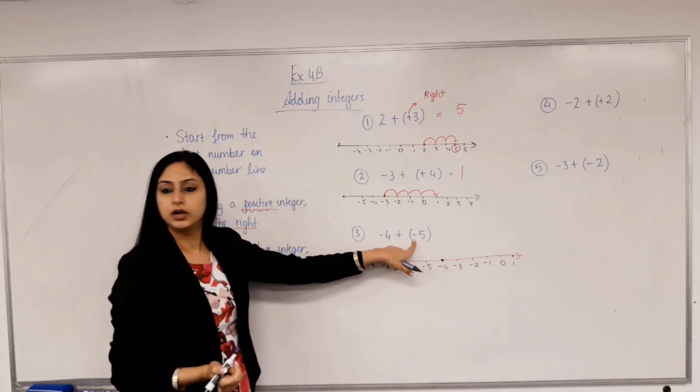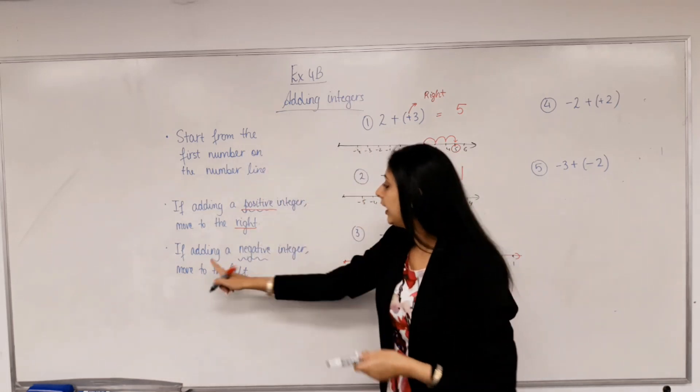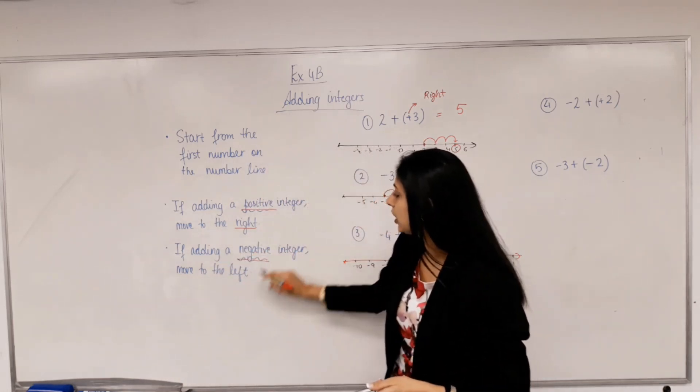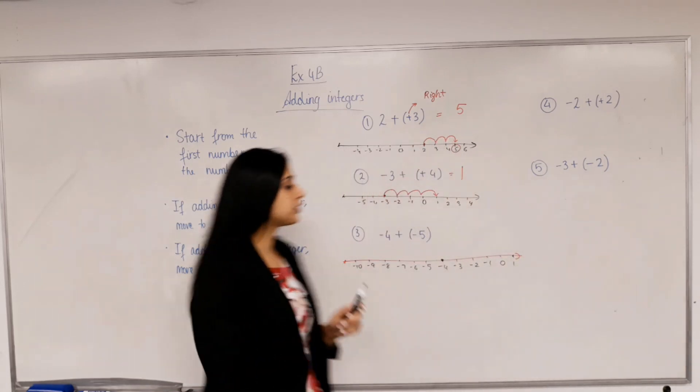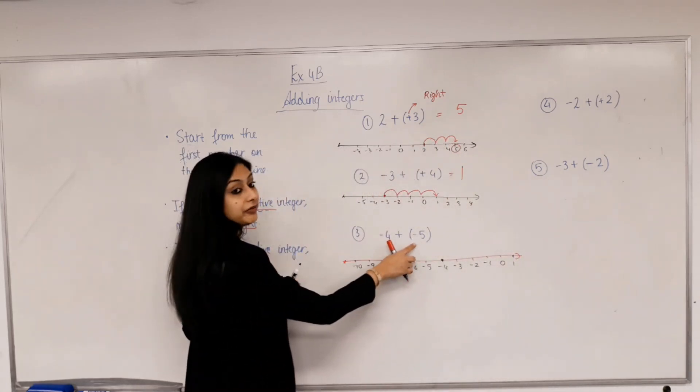Am I adding a positive integer? No. So let's have a look. If adding a negative integer, move to the left. So now, starting from negative 4, I'm going to move left five places. 1, 2,